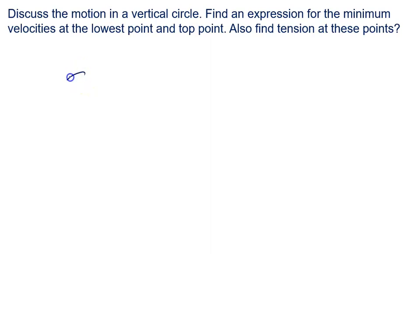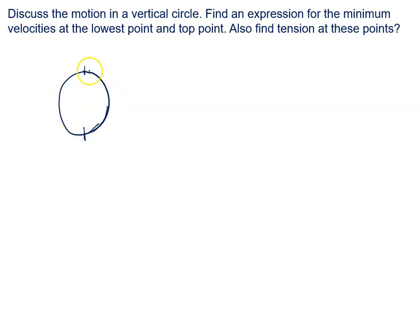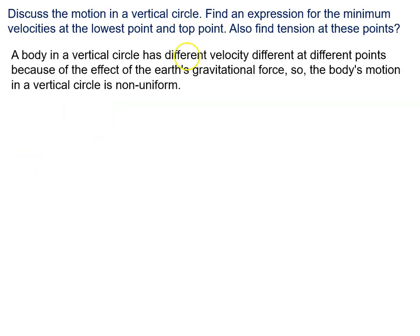As a particle goes from the lowermost point upward, it moves opposite to gravity, so its velocity will decrease. And when it comes back down, it moves along the direction of gravity, so the velocity will increase. So the body in a vertical circle has different velocity at different points.